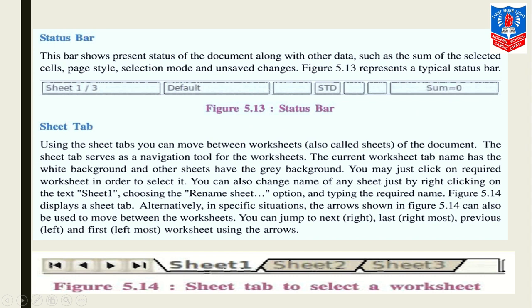Now we talk about sheet tabs. Using the sheet tab, you can move between worksheets, also called sheets, of the document. The sheet tab serves as a navigation tool for the worksheets. The current worksheet tab name has a white background, and other sheets have a grey background. You can see here, this is the white background. The rest of these sheets which are inactive are grey. You may just click on the required worksheet in order to select it. You can also change the name of any sheet just by right-clicking on the text 'sheet one', choosing the name option, and typing the name.